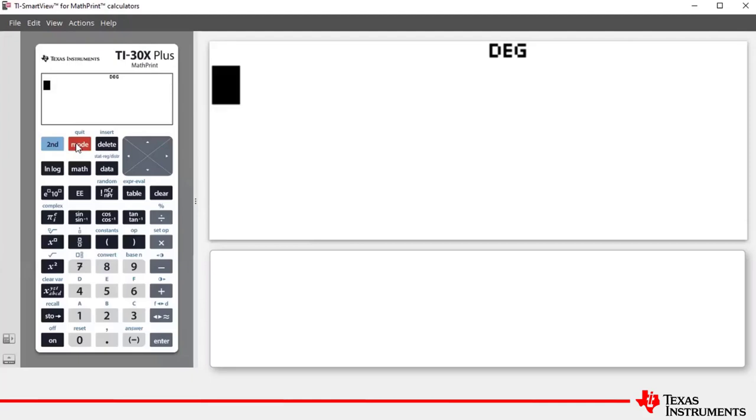We're now going to perform a simple complex number calculation. We're going to calculate the sum of two minus three i and one plus four i.